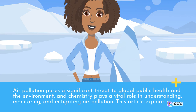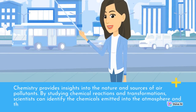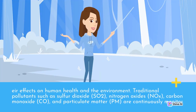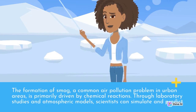In summary, air pollution poses a significant threat to global public health and the environment, and chemistry plays a vital role in understanding, monitoring, and mitigating air pollution. Chemistry provides insights into the nature and sources of air pollutants — including sulfur dioxide (SO2), nitrogen oxides (NOx), carbon monoxide (CO), and particulate matter (PM) — through studying chemical reactions and transformations. The formation of smog in urban areas is primarily driven by chemical reactions, which scientists can simulate and predict through laboratory studies and atmospheric models.